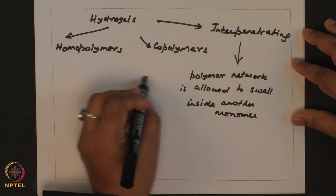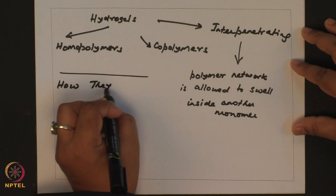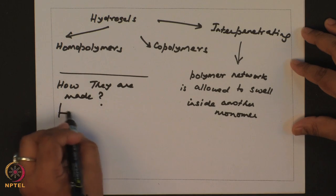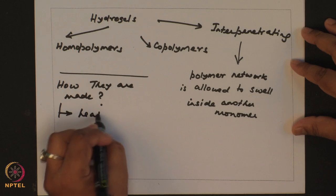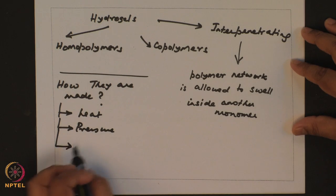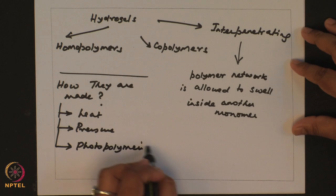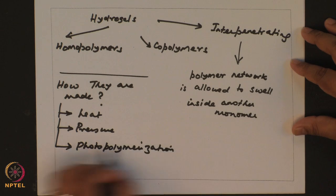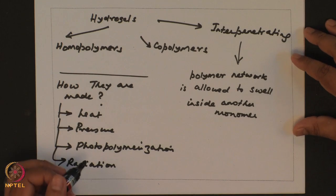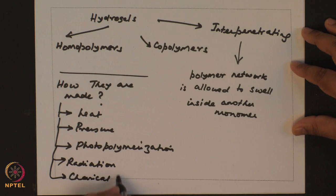You can also classify the polymers based on the process by which they are made. You might modulate heat, pressure, use photopolymerization or radiation like x-rays. So you can have multiple different ways and also I think the most important which I have missed is chemical reaction.